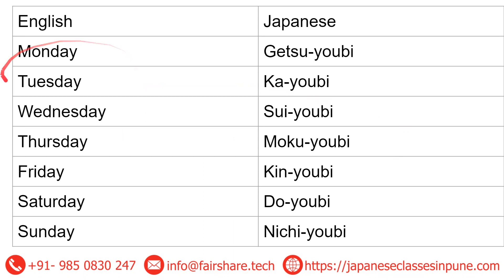Here is the English word and here is the Japanese word. I'm going to tell you the pronunciation — you know the drill — I'm going to pause for two to three seconds after each word so that you can repeat after me. Monday: Getsuyobi. Tuesday: Kayobi. Wednesday: Suiyobi. Thursday: Mokuyobi. Friday: Kin'yobi. Saturday: Doyobi.